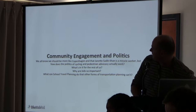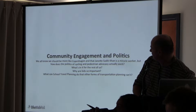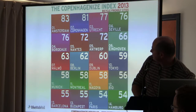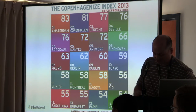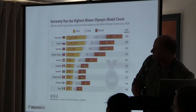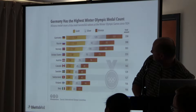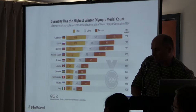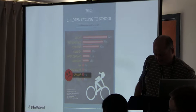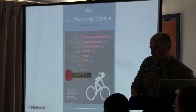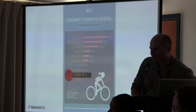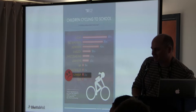Talking about community engagement: we'd love to benchmark our scores similarly to the Copenhagenize Index — tapping into the spirit of competition. For children cycling to school right now, the numbers are pretty dismal, though Canada is doing better than the U.S. — twice as much, actually. But we're in much the same boat compared to European countries, so there's definitely work to do. And what people want is data. We can't argue effectively until we have data in hand.